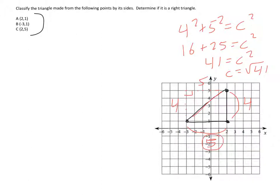So the lengths of my triangle are 5, 4, and the square root of 41. All those lengths are different. So this is a scalene triangle, right, because none of them are the same.